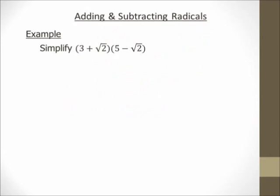Hi there, it's me, Mr. B. We're going to simplify the quantity 3 plus square root of 2 times the quantity 5 minus square root of 2. This looks like a FOIL problem — you distribute twice. So let's distribute the 3 first to both terms. 3 times 5 is 15. For 3 times negative square root of 2: the 3 is the coefficient and the square root of 2 is the inside — you can't multiply them together, so you just stick them together: negative 3 square root of 2.